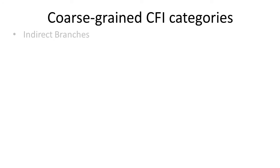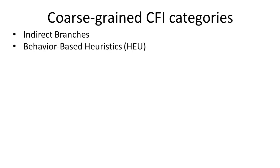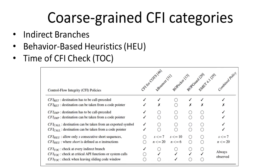We can further classify coarse-grained CFI implementations based on the optimizations they take. First, the checks for dynamic function calls and related return instructions can be more slack. Secondly, some CFI implementations take a different approach — they are based on heuristics to detect suspicious control flow behavior instead of hard checks. A good example is counting the number of instructions executed between two consecutive indirect branches, since an attack on control flow typically results in an increased number of branch instructions. Thirdly, CFI implementations can differ in when they apply runtime checks, with some only performing checks at security-critical points. This table shows some academic proposals for coarse-grained CFI approaches.